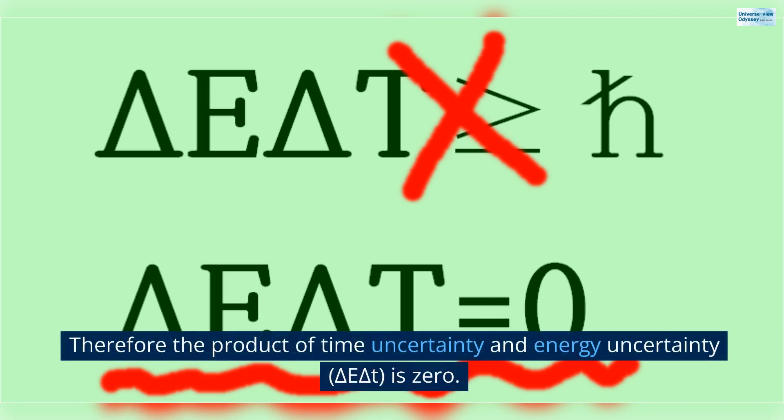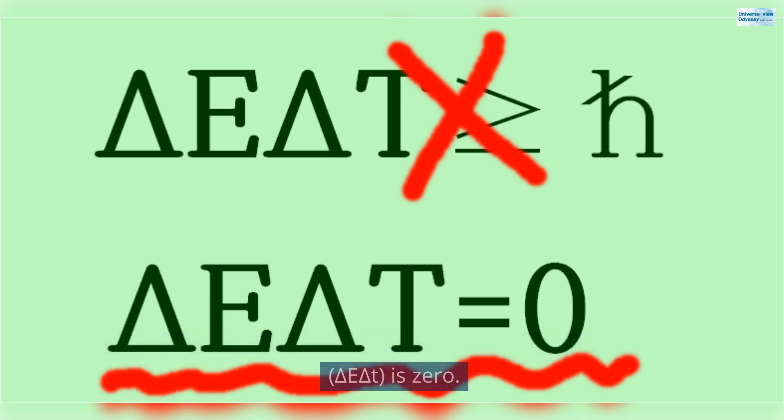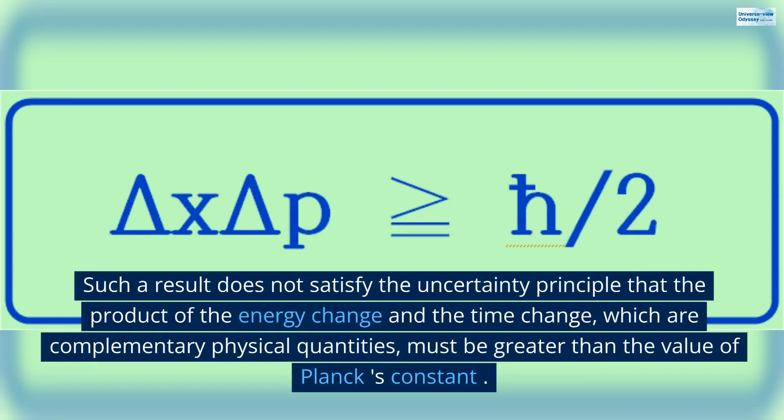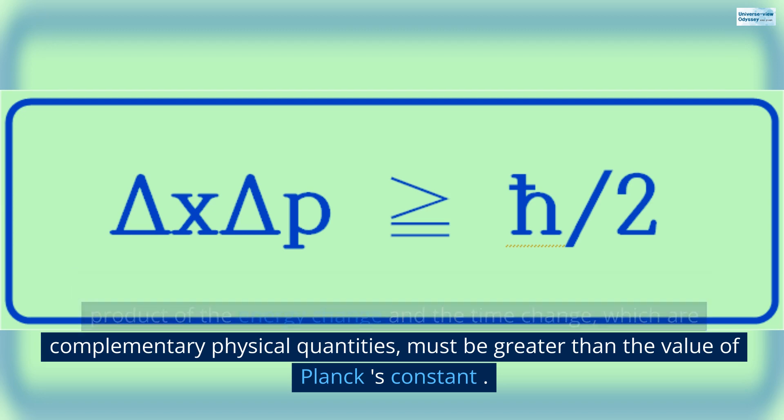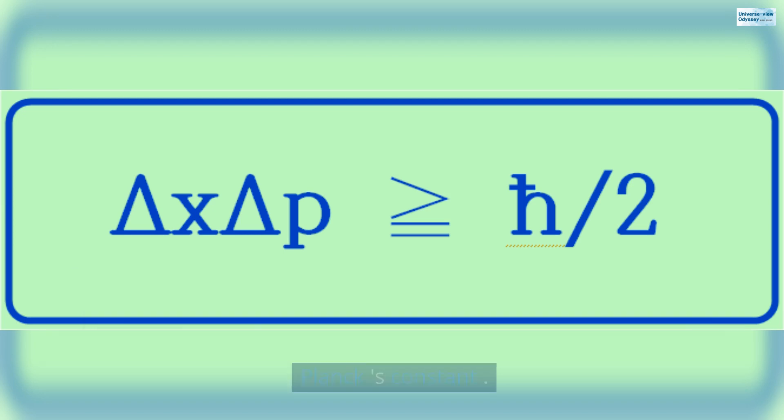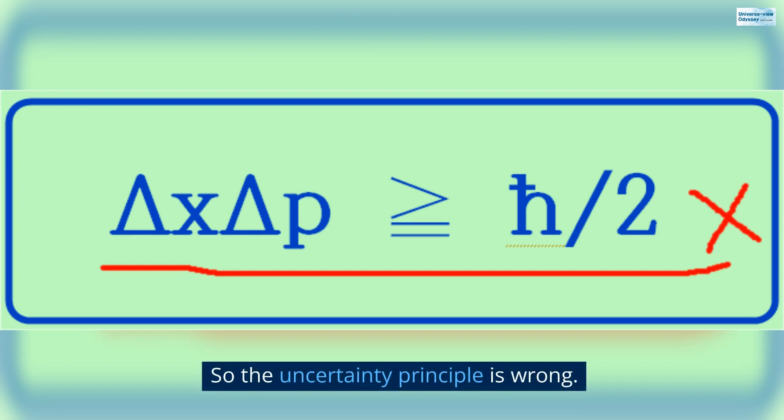Therefore, the product of time uncertainty and energy uncertainty, delta E delta T, is zero. Such a result does not satisfy the uncertainty principle that the product of the energy change and the time change, which are complementary physical quantities, must be greater than the value of Planck's constant. So the uncertainty principle is wrong.